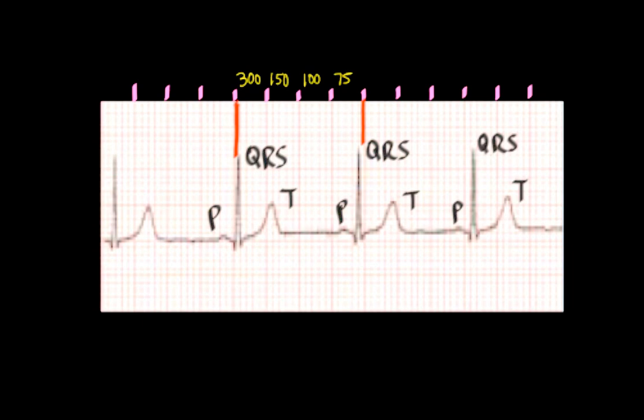But in general, when the heart rate is regular, this method of finding two QRS complexes on an ECG tracing and estimating the RR interval by counting the number of big boxes is generally going to be good enough for determining heart rate in most patients. And that concludes this video on calculation of the heart rate from the ECG.